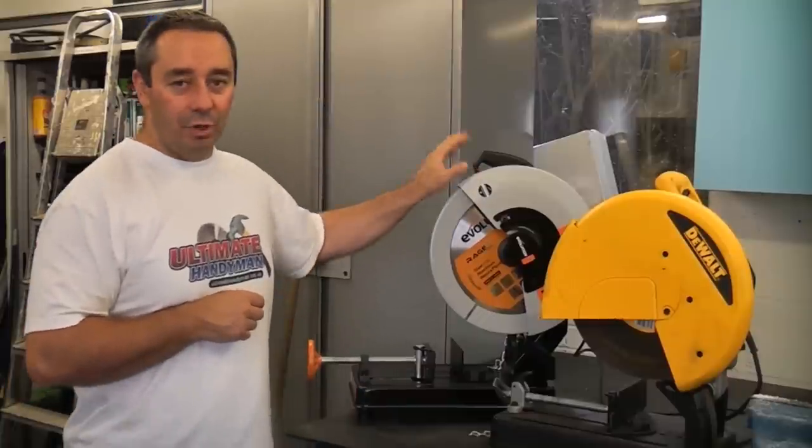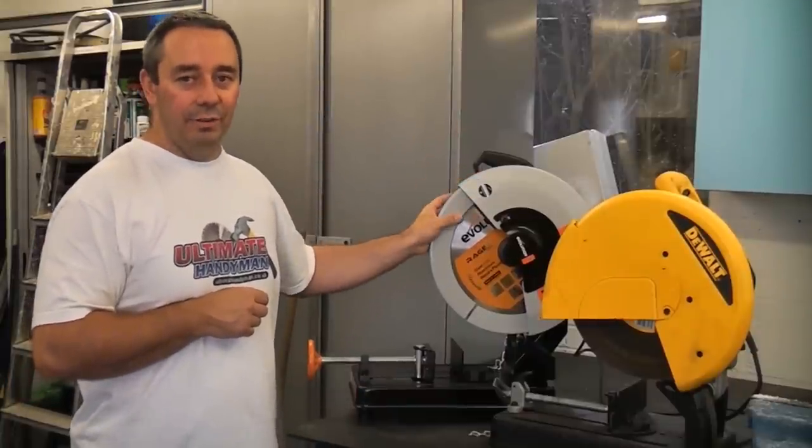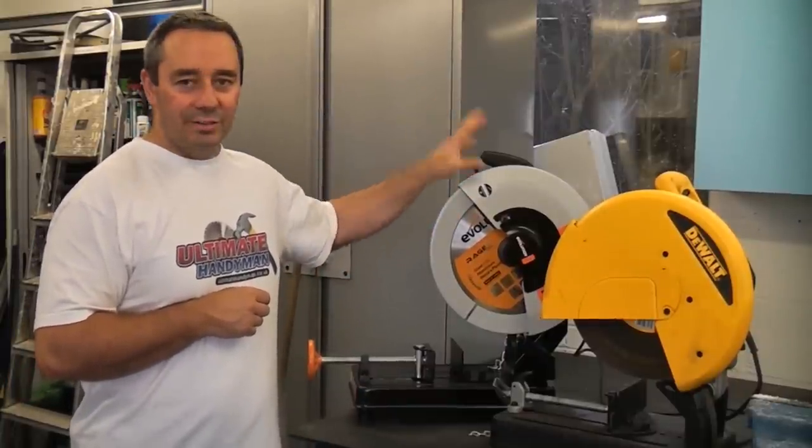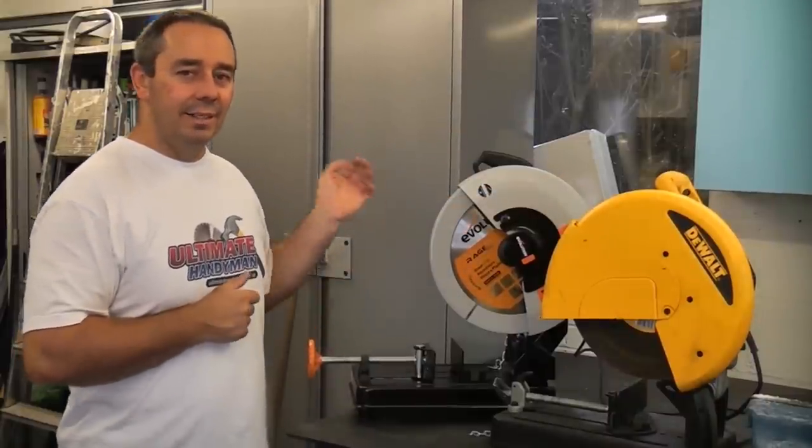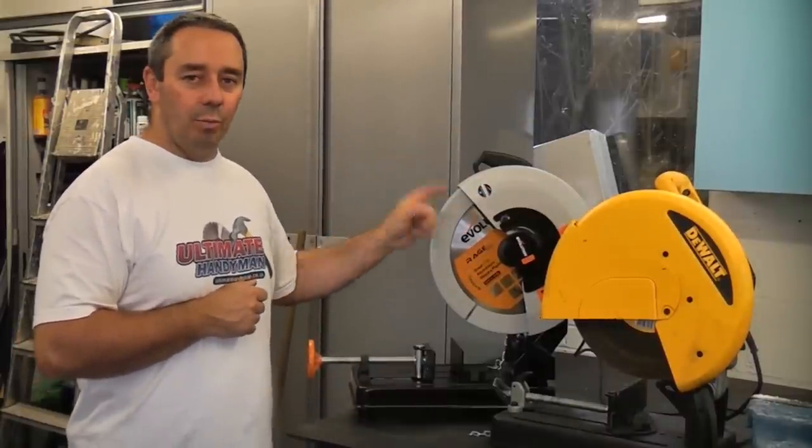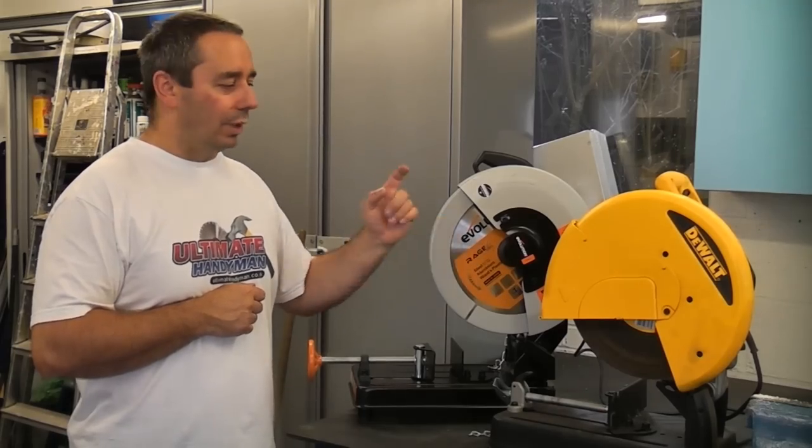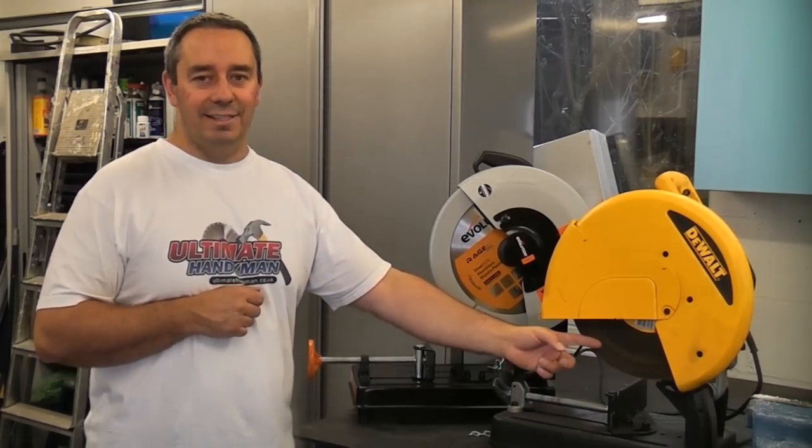Another advantage of this saw is that you can actually cut aluminium on it as well. So this machine has a lot of advantages over this machine. People keep asking me how long the blades last and I have been reliably informed that one of these Evolution blades will outlast 20 of the abrasive discs.